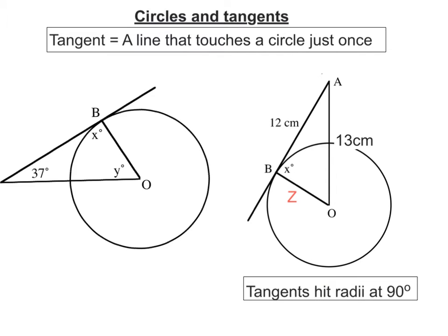In this video, we're going to look at circles and tangents. A tangent is a line that just touches a circle just once. For instance, this is a tangent here because it just touches once.